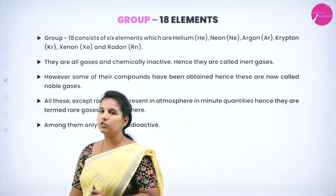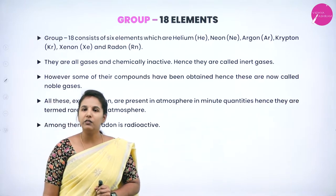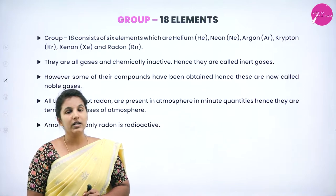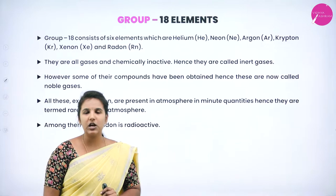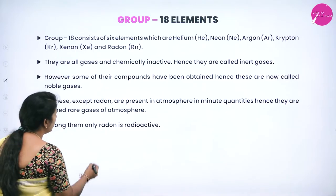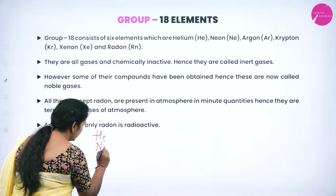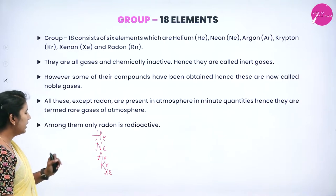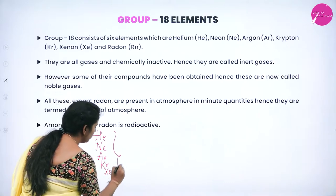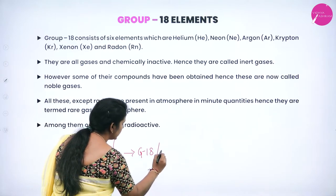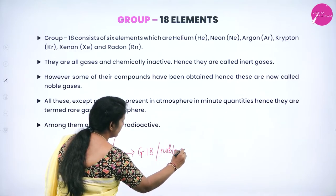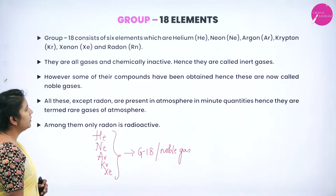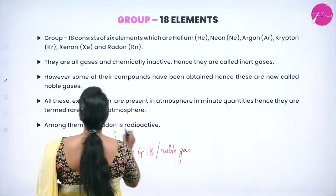First, we will see what group 18 elements are. In our periodic table, group 18 elements are also known as noble gases, inert gases, or zero group elements. The elements in this group are helium, neon, argon, krypton, and xenon. However, since some of their compounds have been obtained, they are now called noble gases rather than inert gases.